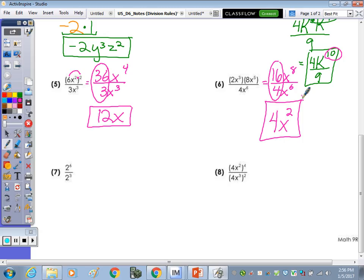What about 2 to the 6th divided by 2 cubed? 2 cubed. But since it's all numeric, we have to simplify that to the number that it equals. So 2 times 2 times 2, 2 to the 4th, 2 cubed is 8.